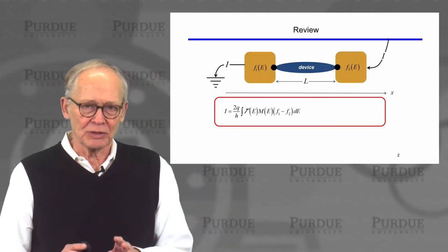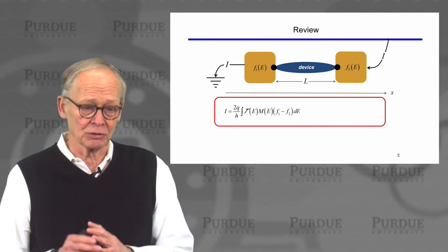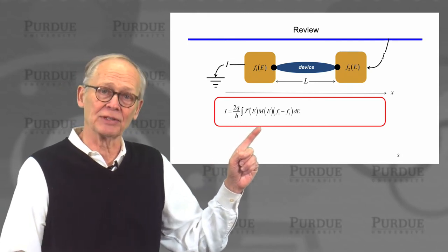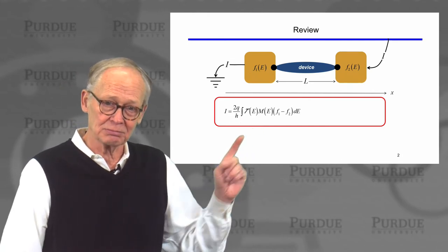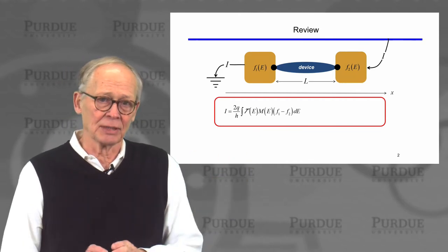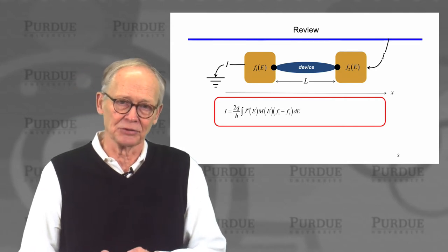Just as a quick review, we talked about a general expression for the current in a two-terminal device. This general current expression is sometimes called the Landauer approach to current and transport, and it involves a number of fundamental constants and quantities like transmission, channels, Fermi window.